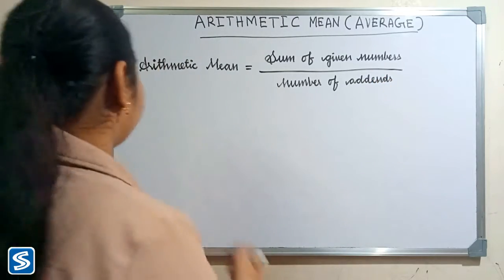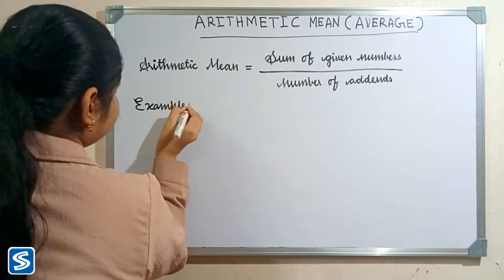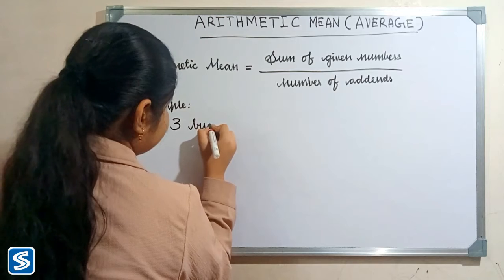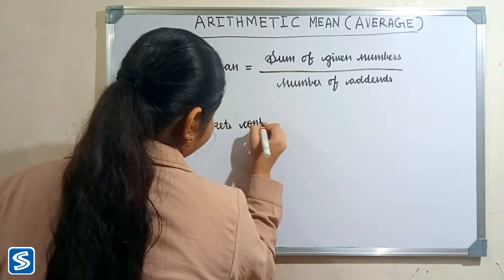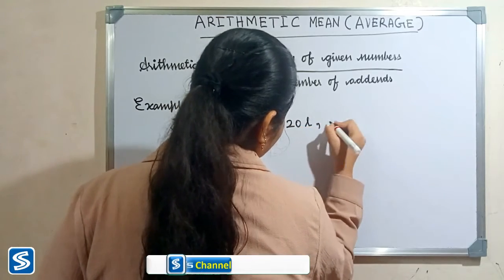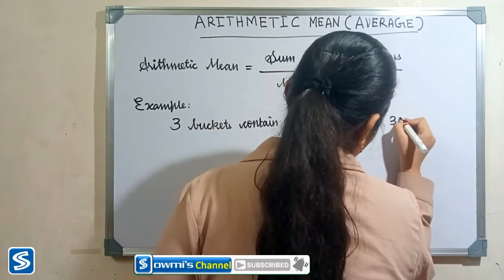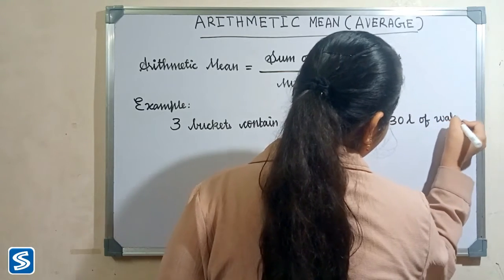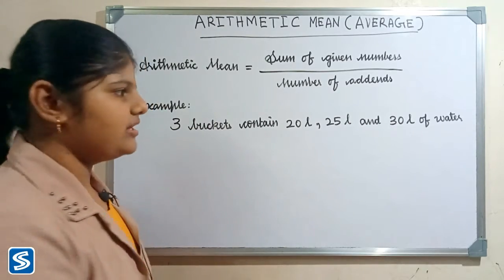Now we will take some examples. For example, we can take three buckets containing 20 liters, 25 liters, and 30 liters of water. Now we have to find the average of water in the buckets.